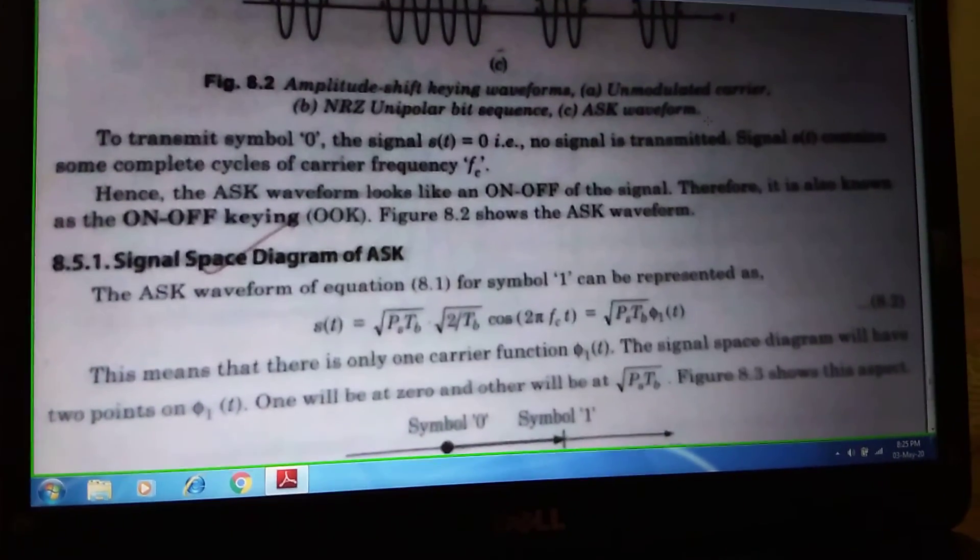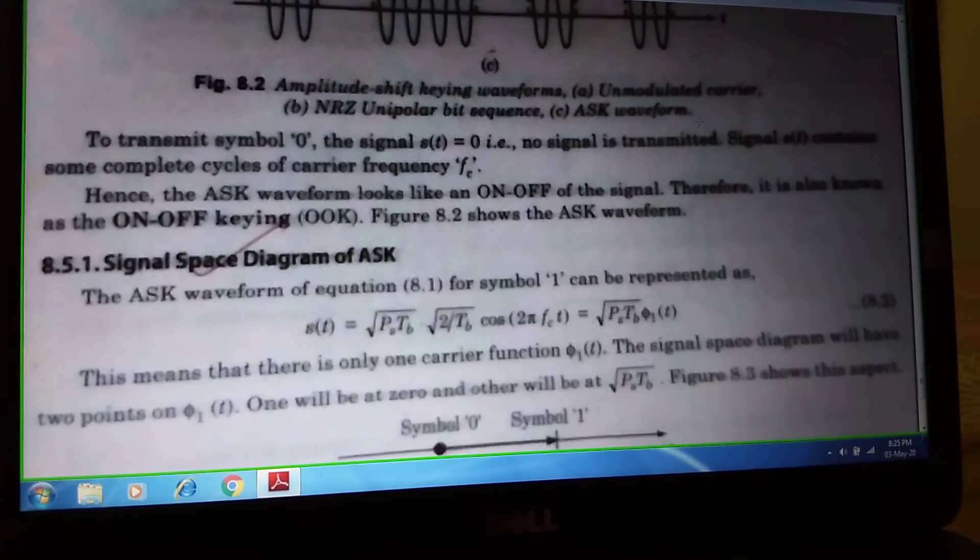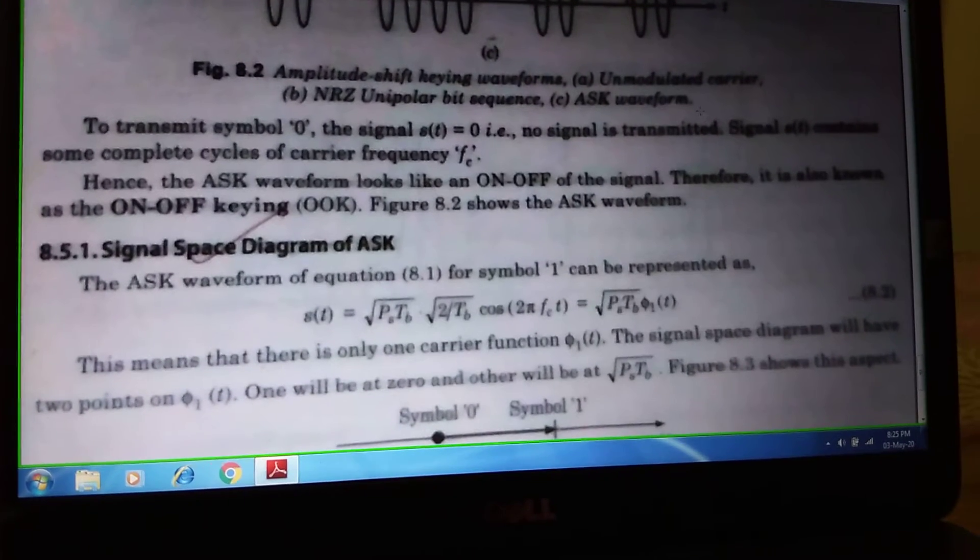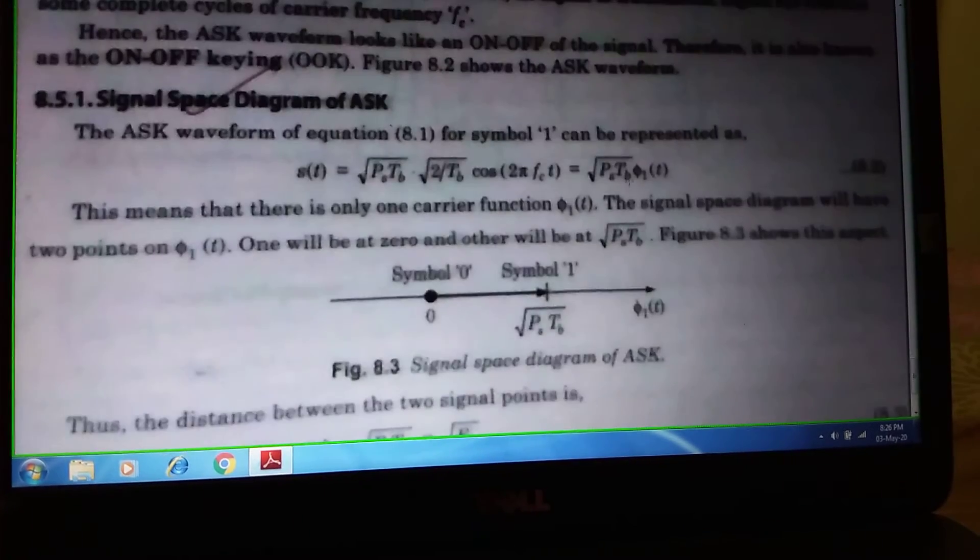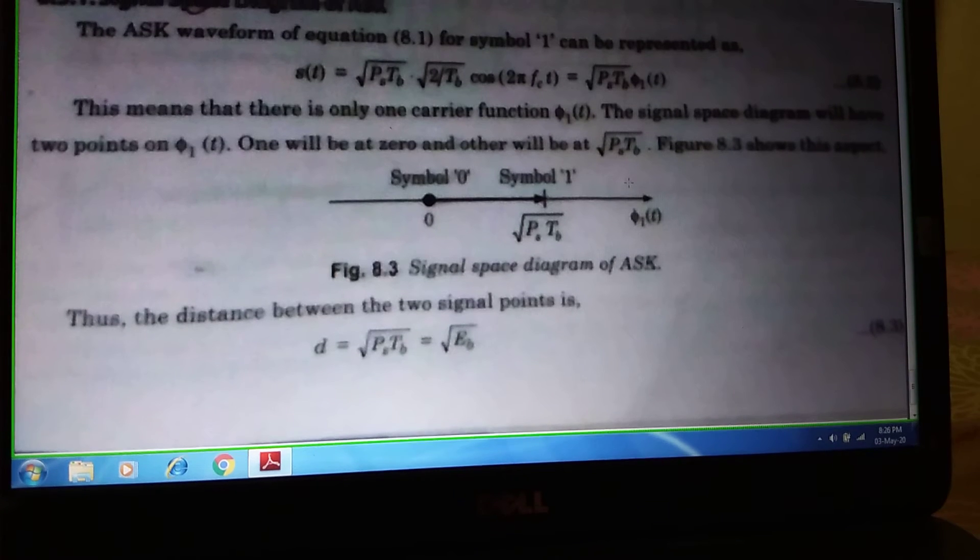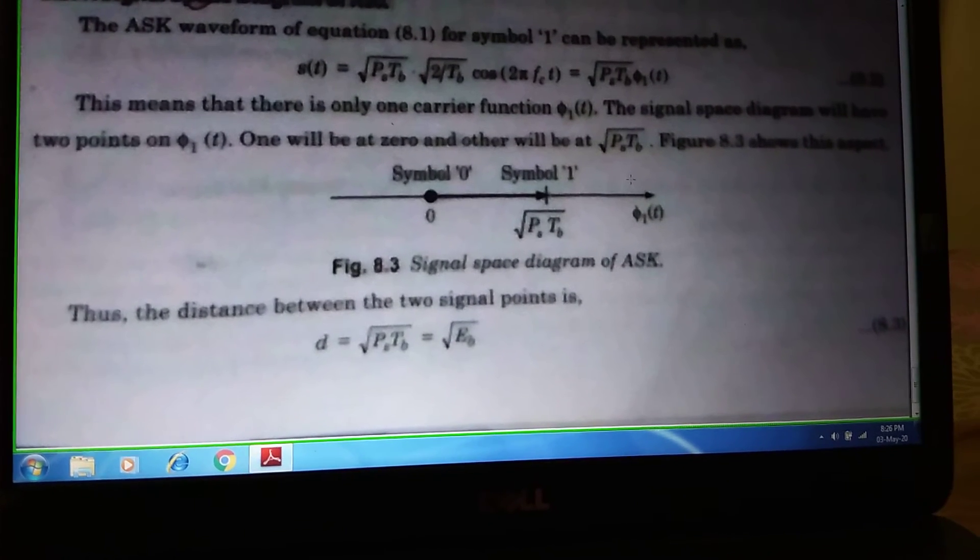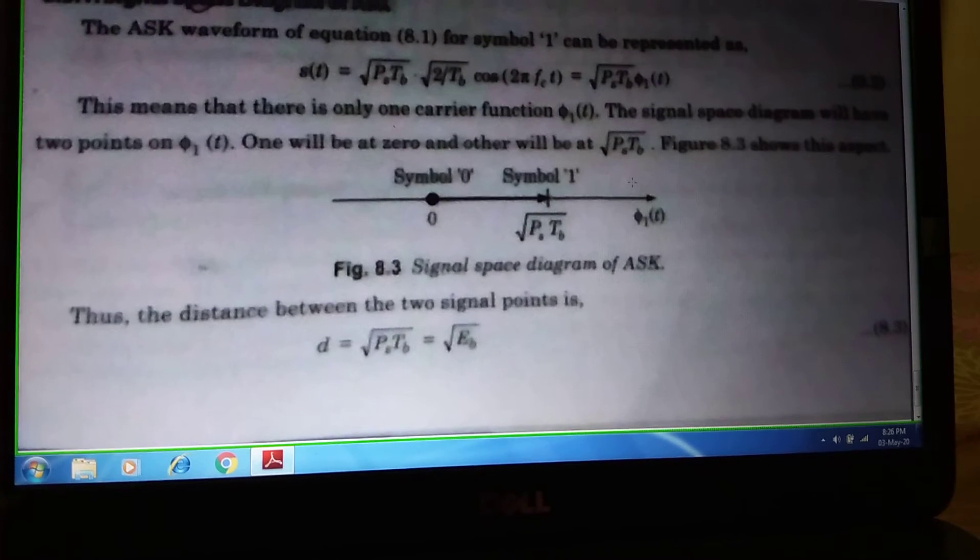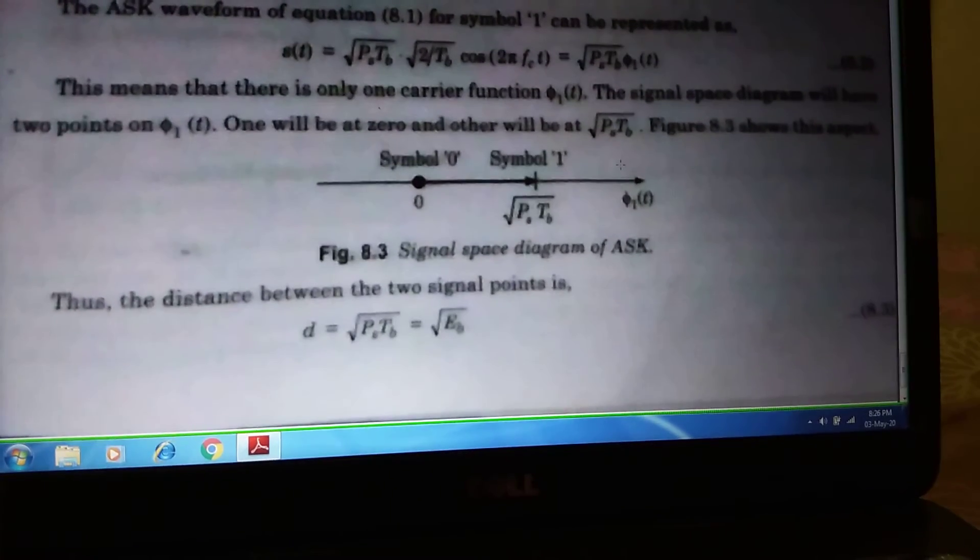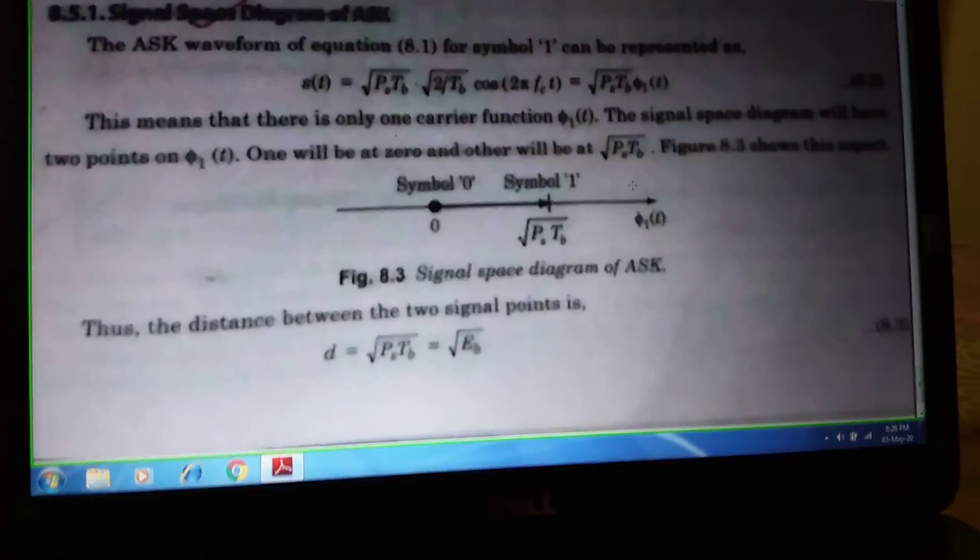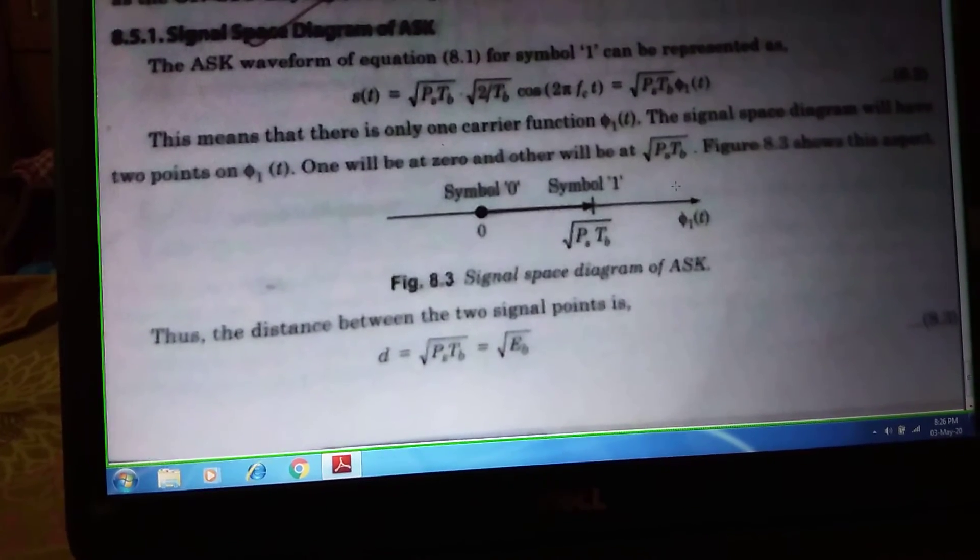Next topic is signal space diagram of ASK. Signal space diagram means the difference between symbol 1 and symbol 0. If we calculate the symbol 1 and symbol 0 difference in case of ASK, that is the Euclidean distance we are getting, the notation is small d. If we basically calculate, we will get d equals root over Ps Tb, that equals root over Eb. The figure is given, the signal space diagram of ASK is given in the book.